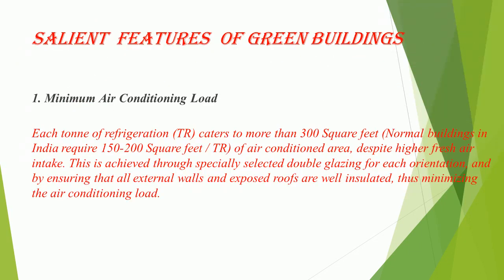Salient Features of Green Buildings. Feature 1: Minimum air conditioning load — each ton of refrigeration (TR) caters to more than 300 square feet, whereas normal buildings in India require 150 to 200 sq. ft. per TR of air-conditioned area, despite higher fresh air intake. This is achieved through specially selected double glazing for each orientation and by ensuring all external walls and exposed roofs are well insulated, thus minimizing the air conditioning load.